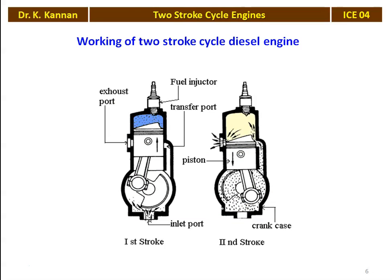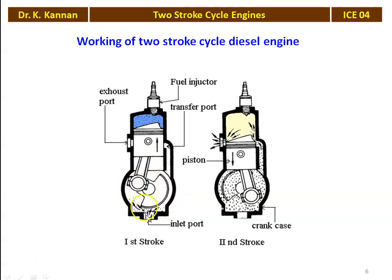Now we look at the 2-stroke cycle diesel engine. It has the same kind of ports: transfer port, exhaust port, and an inlet port at the bottom opened by a small butterfly-type valve. The valve opens because of the pressure difference. When the piston moves upward, a vacuum is created in the crankcase, the valve opens, and air enters into the crankcase.